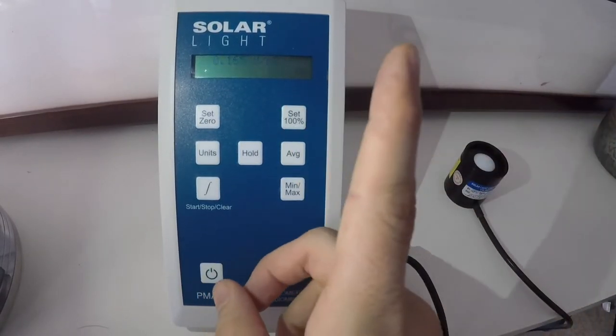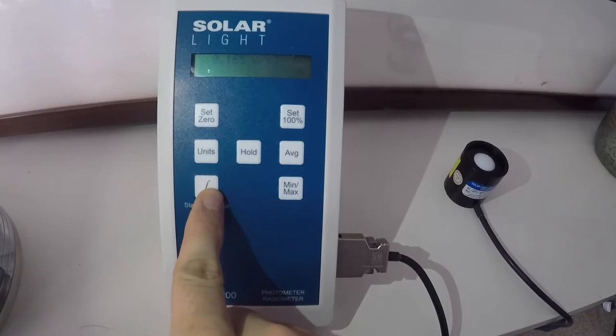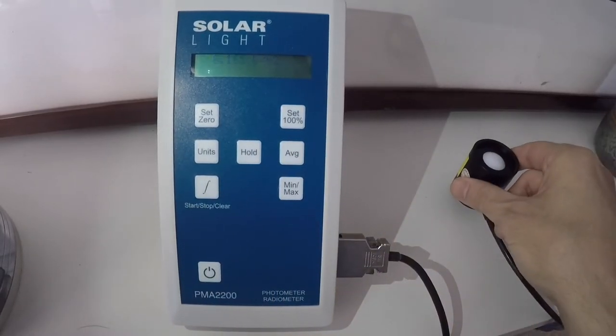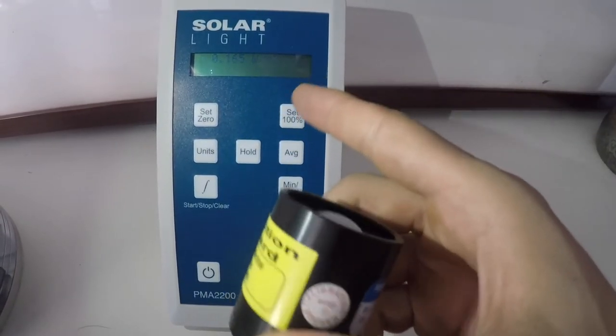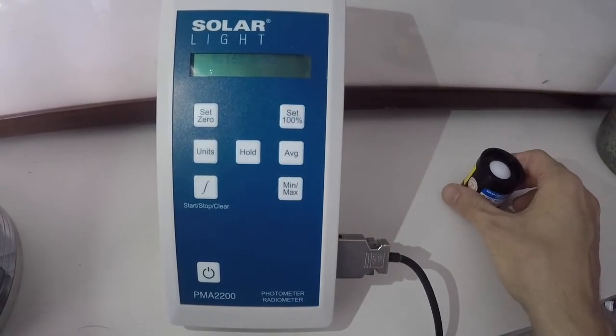This is also handy when you do the Dose feature. Because if I have my sensor under a light source, I can hit Hold and then move the sensor away, and this will keep counting my dose even though I can be across the room.